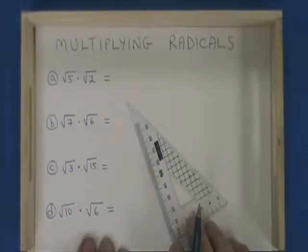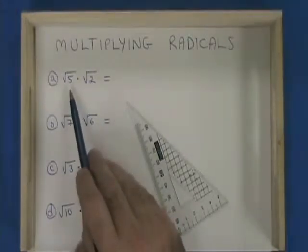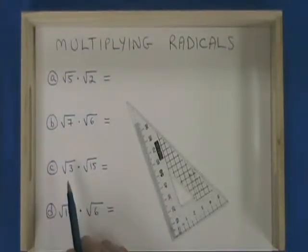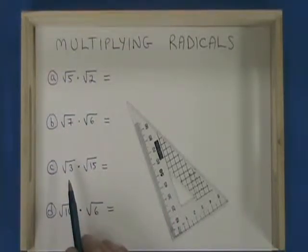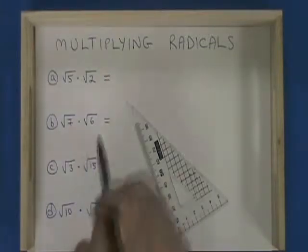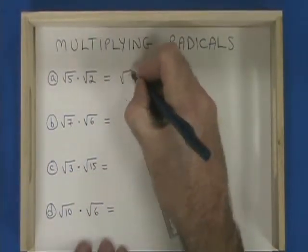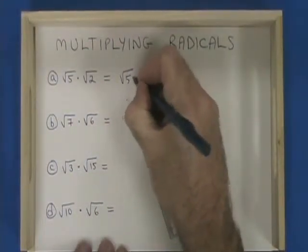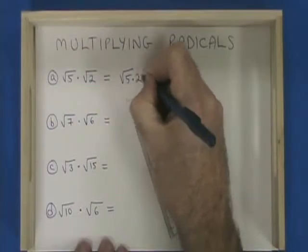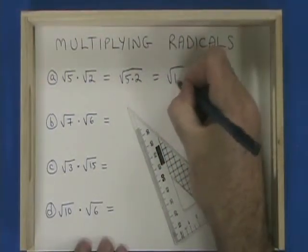This video will illustrate how to multiply radicals. When you have root 5 times root 2, you can combine them into a single term just by multiplying the contents of the two radicals. Root 5 times root 2 is equal to the square root of 5 times 2, which is the square root of 10.